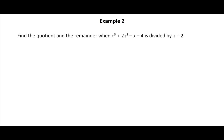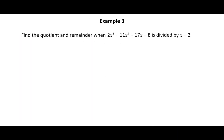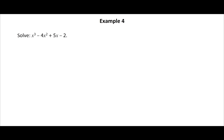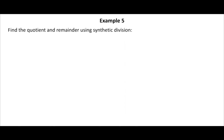Here is an example applying Horner's method of synthetic division: find the quotient and remainder when x cubed plus 2x squared minus x minus 4 is divided by x plus 2. Next example: find the quotient and remainder when 2x cubed minus 11x squared plus 17x minus 8 is divided by x minus 2. Also find the quotient and remainder using synthetic division for x cubed plus 8 divided by x plus 2. Click the solution button to view the solutions.